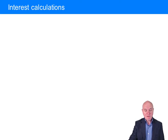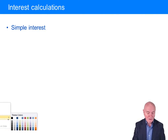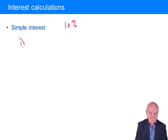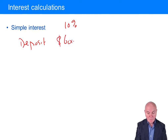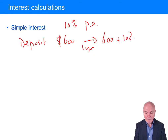The first type of interest we can consider is known as simple interest. Simple interest is very simple to calculate. Let's say the interest rate was 10% and you deposit 600 — this is a per annum rate. Then after one year you would have 600, which is called the principal, plus 10% of that, giving you simply 660.